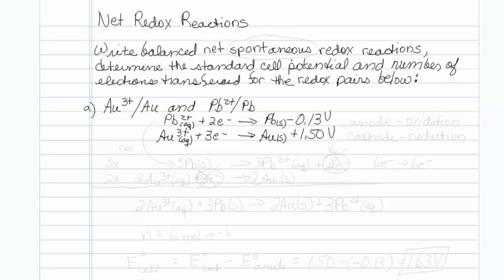This is how to write net redox reactions. Write balanced net spontaneous redox reactions. Determine the standard cell potential and number of electrons transferred for the redox pairs below.